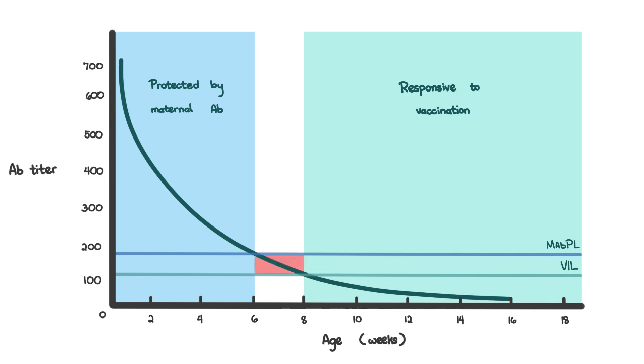But what's this little space here in the middle? Well, that's when the animal is not protected by maternal antibodies anymore and isn't responsive to vaccination yet. This is a window of susceptibility, where the animal is susceptible to disease.